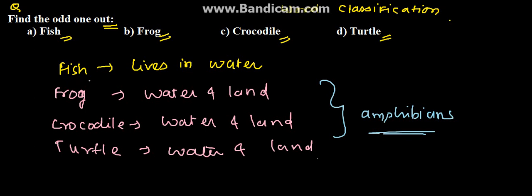So fish is the odd one out. Therefore we can say the odd one out is option A, that is fish. That is the solution for the given problem. Thank you.